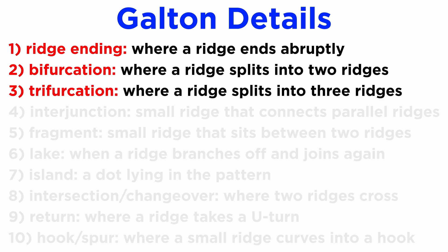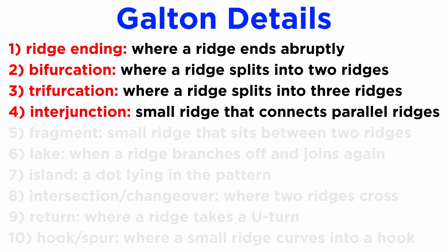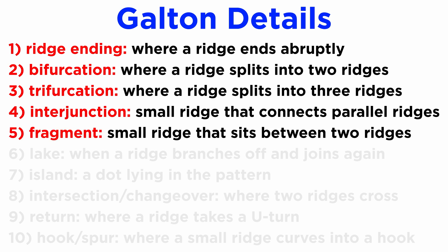3. Trifurcation — this is similar to bifurcation, the only difference being that in this case the ridge splits into three ridges. However, this detail is rarely observed in an impression. 4. Interjunction — this is a small ridge that connects two parallel ridges, thus acting as a bridge. It is also known as a crossover. 5. Fragment — as the name implies, this detail is a small ridge lying in the space between two ridges. It is not connected to any of the ridges.